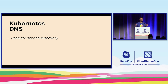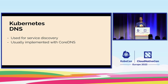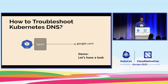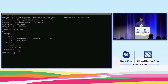Next example: we're looking at something a little bit more advanced. As we have learned, Kubernetes DNS is used for service discovery. It's usually implemented by CoreDNS, but that's not mandatory. It looks simple, but it is not always simple. This is a simple pod in another namespace that simply tries to reach out to google.com.